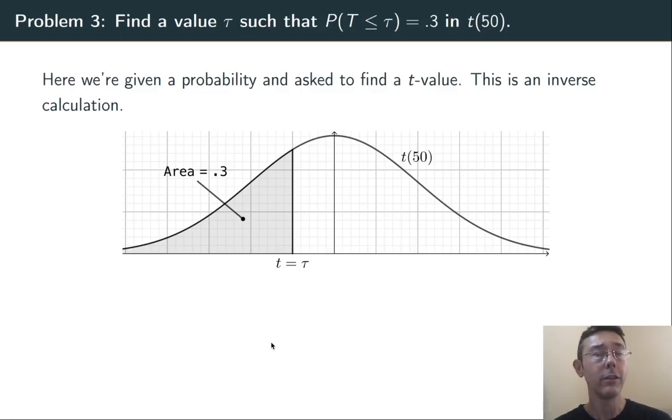Here, instead of being given a t-value and having to compute a probability, we're given a probability and we have to compute a t-value. So this is an inverse CDF calculation. Here's the picture. We have a shaded area of 0.3, a probability of 0.3. And I've labeled the cutoff there, t equals τ. We need to find what τ is.